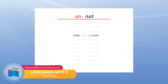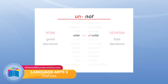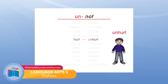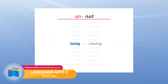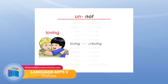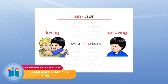'Wise.' Unwise. To make good decisions is to be wise; to make bad decisions is to be unwise. 'Hurt.' Unhurt. He was unhurt in the accident — unhurt means the opposite of hurt. 'Loving.' Unloving. He's a very loving person, means he's kind. Versus unloving — he's mean.